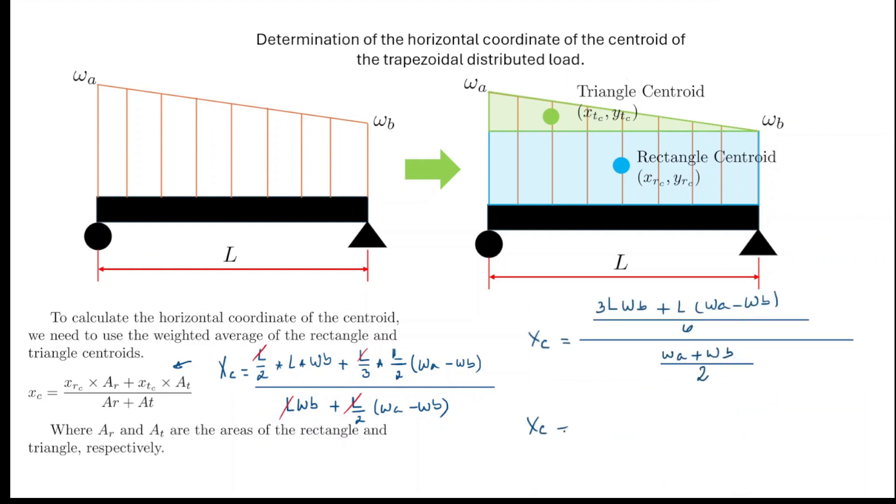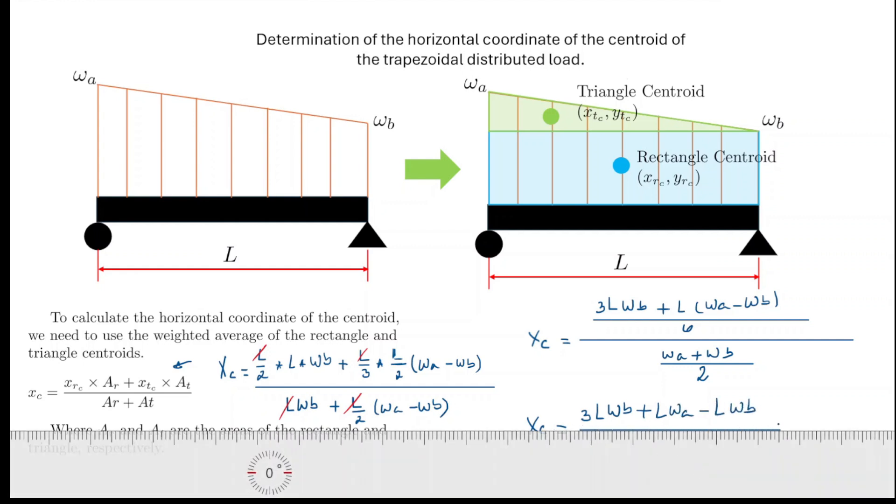Then XC is going to be equal to what? So on the top, when I have this six, and then I have this two, that's going to be turned into three. So I can already linearize certain things. For example, on the top is going to be 3LWB plus LWA minus LWB. And that's going to be divided by 3 that multiplies (WA + WB).